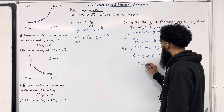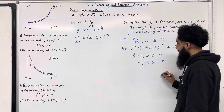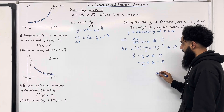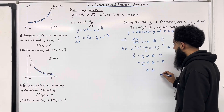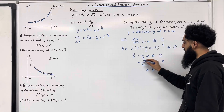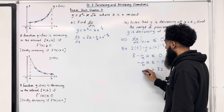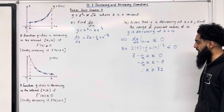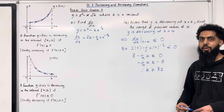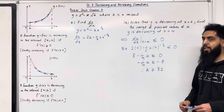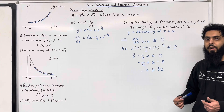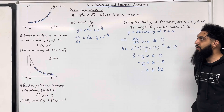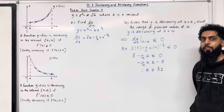So -(1/4)k ≤ -8. Dividing by -1/4 flips the inequality sign, giving k ≥ -8 ÷ (-1/4) = 32. Therefore, the range of possible values of k is k ≥ 32. This completes exam style question 2 and this teaching video on 12.7 increasing and decreasing functions. If you found this video useful, please don't forget to subscribe, leave a like, leave a comment, and turn on your notification bell so you receive notifications every time I post a new teaching video.